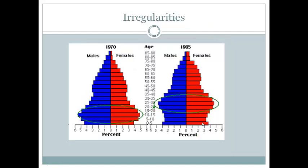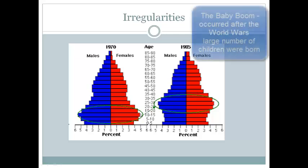Sometimes there are irregularities in your population pyramids. Here's a population pyramid spanning 15 years from 1970 to 1985. You'll notice that there was a big bulge in the number of people born during that time, and it has slowly moved up the population pyramid as those individuals became older.